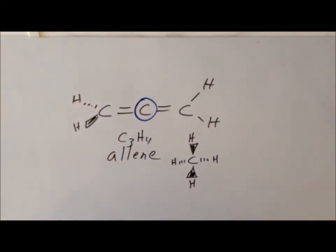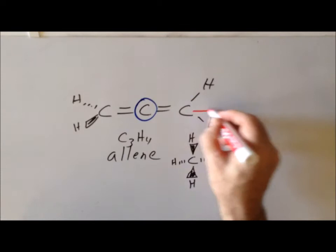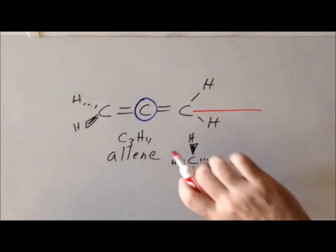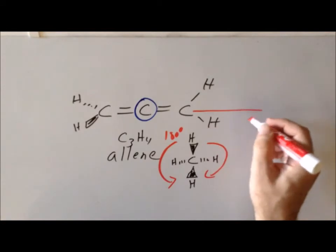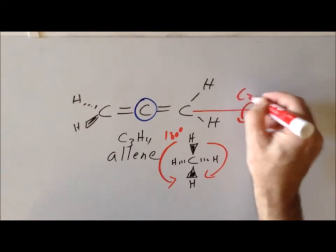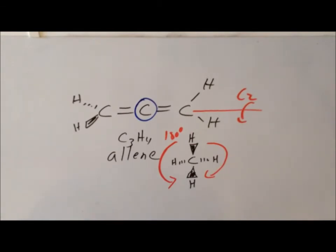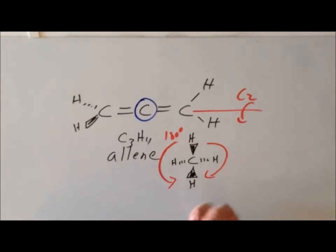We want to figure out the point group symmetry of this molecule. Looking along the main axis and rotating 180 degrees in either direction, we have a C2 rotation axis. Looking at this particular arrangement, it suggests we may have an improper rotation. We've seen an arrangement of atoms like this in the tetrahedral group for molecules such as methane, and we want to demonstrate that this gives us an S4 improper rotation.